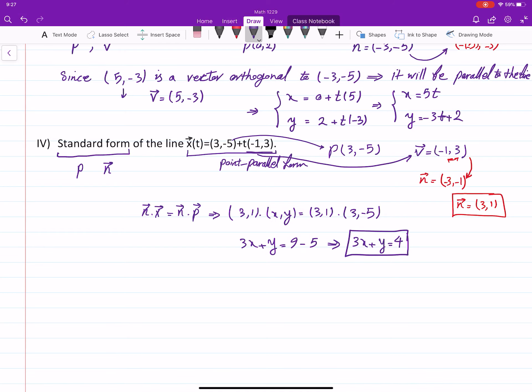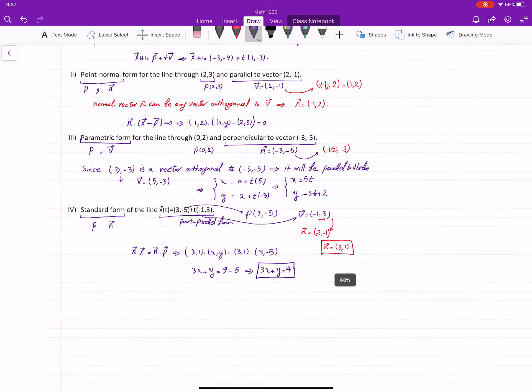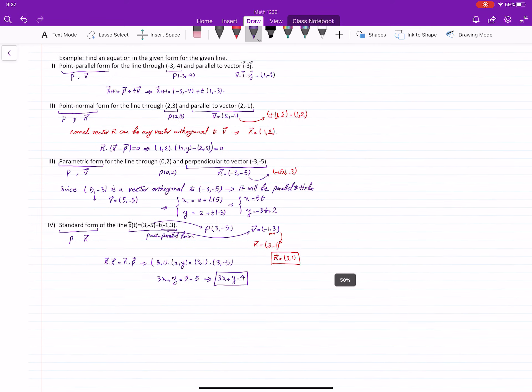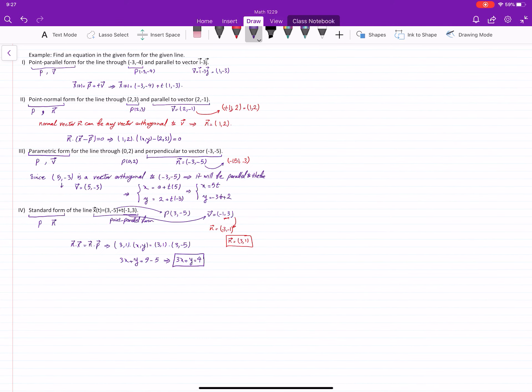Now, you have to know, as you saw in these examples, what kind of information you need for each one of the forms of the line, equation for the line in R2, and then how you can derive those equations using the given information in the problem.